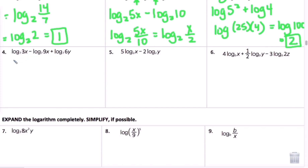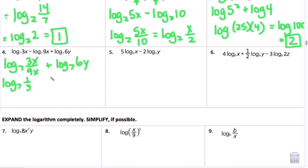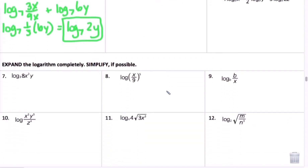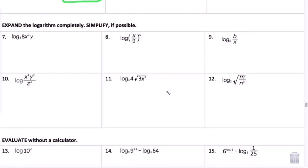One more from this section: I see subtraction, so using the quotient rule: log base 7 of (3x over 9x) plus log base 7 of 6w. The 3x and 9x simplify to one-third, giving log base 7 of one-third. Multiplying by 6w gives log base 7 of 2y. The other examples will be in your notes in Google Classroom.